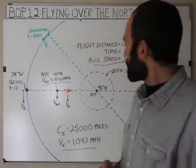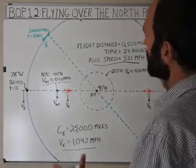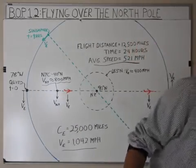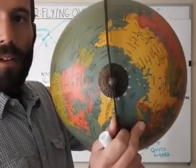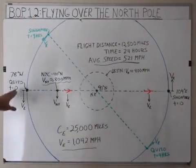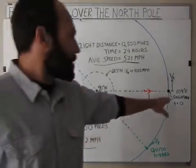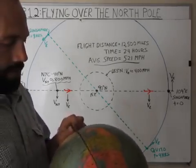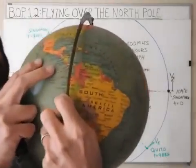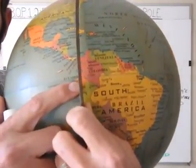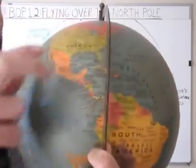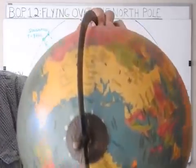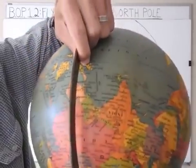What I have here is a view of the Earth looking down on the North Pole, kind of like I was talking about in Episode 1.1. What I have is Quito, Ecuador here and Singapore over here. If you look at this on the globe right here, Quito is right here in Ecuador — we're going to say it's right at the equator, it's a little south. We're going to take a flight from Quito over the North Pole to Singapore.